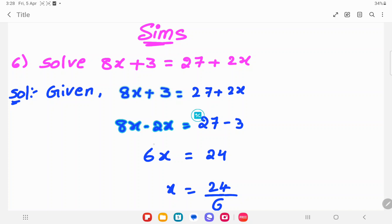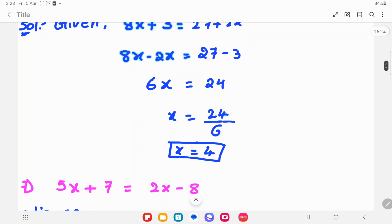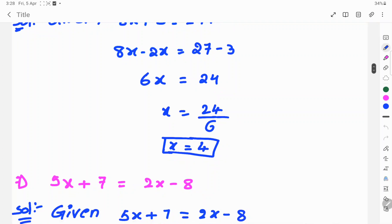So 8x minus 2x is 6x equals 27 minus 3 which is 24. Here you find the x value. This 6 divides both sides because 6 is multiplied with x. So x equals 24 by 6. 6 cancels in 24 four times, so x equals 4.